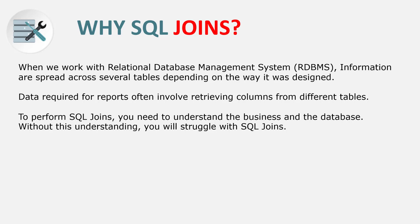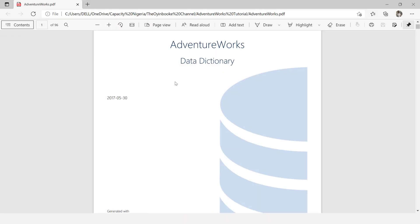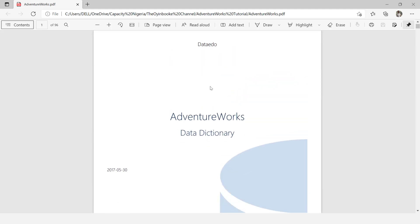How do we address the SQL challenges — the business knowledge as well as the database? For Adventure Works, I have two resources: a data dictionary and a database diagram. You might not have these for your organization, or the one you have may not be updated. For example, the last updated Adventure Works data dictionary by Microsoft was 2010, and the one from Dataedo was last updated in 2017. I am using Adventure Works 2019, so there are a few differences, but these resources still help.